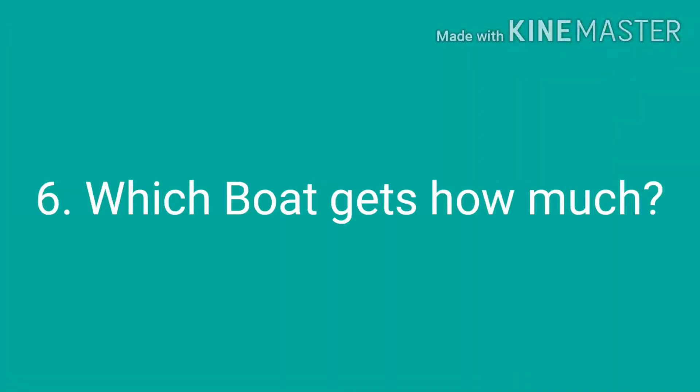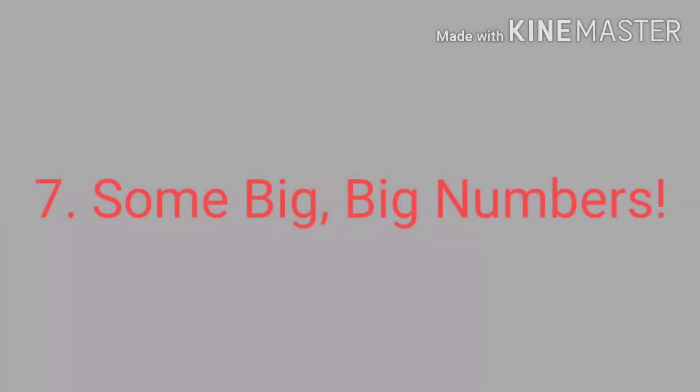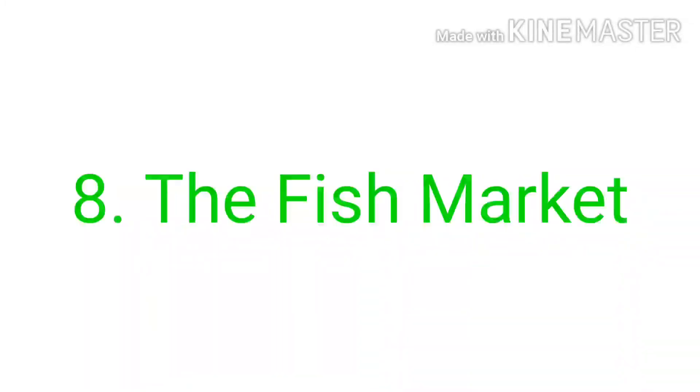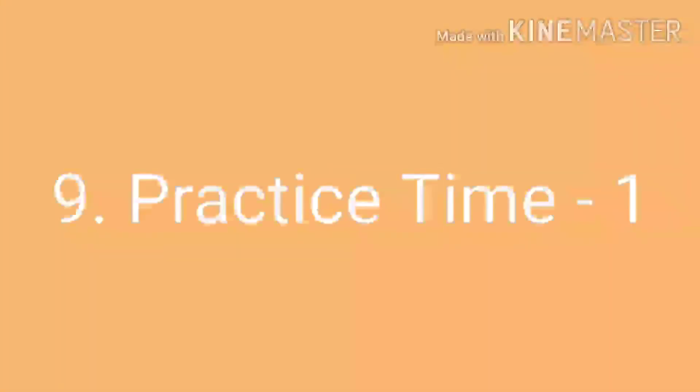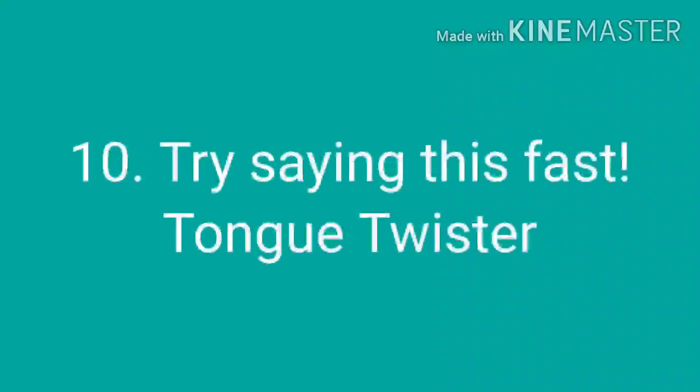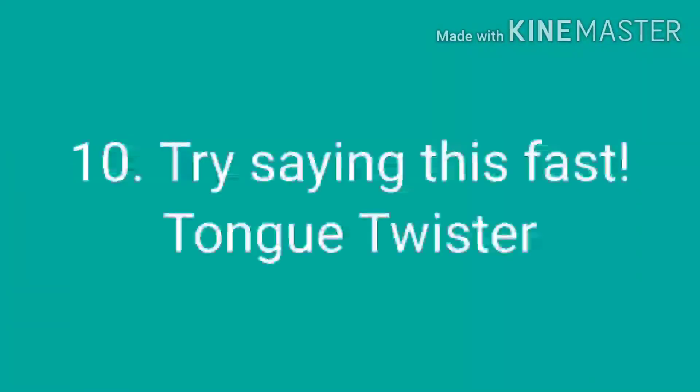Topic 7 is Some Big, Big Numbers, which is the most important topic in this chapter, where we learn to read and write many large numbers. Topic 8 is The Fish Market. Topic 9 is Practice Time, where we solve different problems. Topic 10 is Try Saying This Fast, which is a tongue twister.